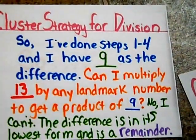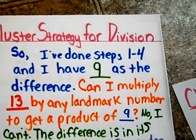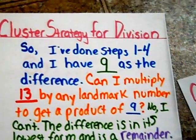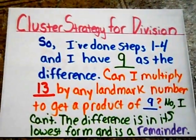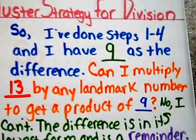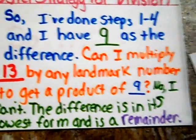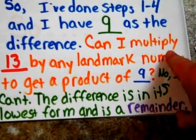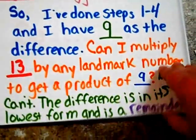So, I've done steps 1 through 4 and I have 9 as the difference. Can I multiply 13 by any landmark number to get a product of 9? No, I can't. The difference is in its lowest form and is a remainder.